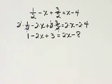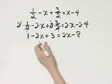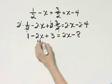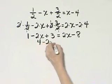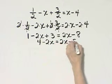Notice I have no parentheses. I do have a couple of like terms. 1 plus 3 is 4, so I'll go ahead and write that as 4 minus 2x is equal to 2x minus 8.